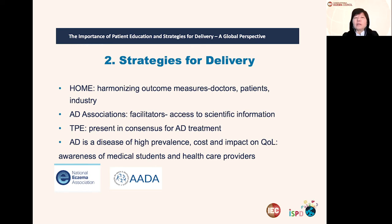What are the strategies for delivery? Two important initiatives stand out. First, the HOME — Harmonizing Outcome Measures for Eczema — which involves doctors, patients, and industry searching for harmonization of these measures. Second, atopic dermatitis associations are great facilitators, especially for access to scientific information. TPE is already present in most AD treatment consensus guidelines. Because AD is a disease of high prevalence, high cost, and impacts on quality of life, the awareness of medical students and healthcare providers is essential.